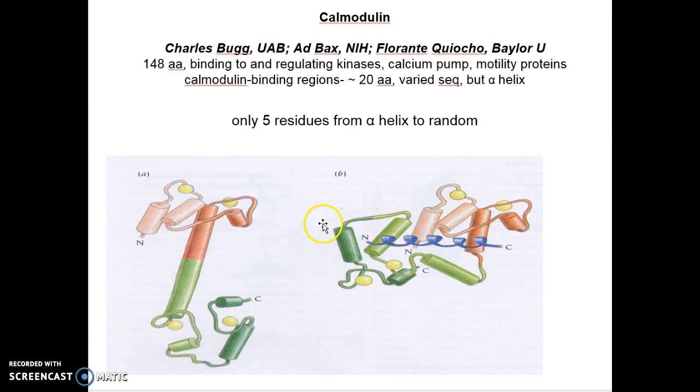This slide shows different structures when calmodulin is alone or with a substrate alpha helix. Calmodulin itself has a dumbbell structure, each end has two EF hands with calcium. It has a long stretch of a single alpha helix, but when it binds to substrate, the middle five residues turn into random structure so that the two ends interact with each other, making a compact global structure.